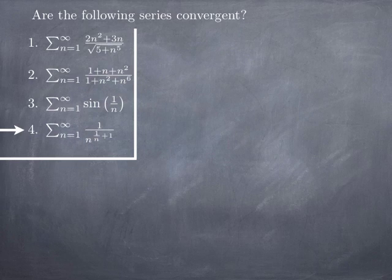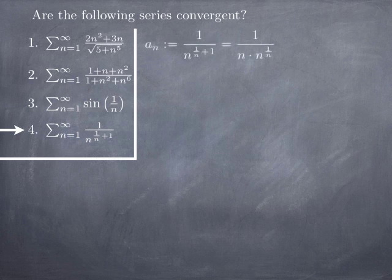To conclude, we look at a series where it is a little trickier to figure out what to compare with: the series of 1/n^(1/n + 1) — a series of positive terms. We take a_n = 1/n^(1/n + 1), and note that n^(1/n + 1) = n · n^(1/n). As n → ∞ this goes to 0, but we want to know at what rate — in order to find the right b_n. We need to determine the behavior of n^(1/n) as n → ∞.